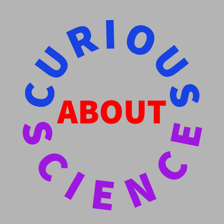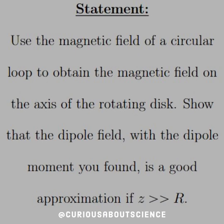All right, we're using some old results and some new techniques, and we'll see which one works out better. So use the magnetic field of a circular loop to obtain a magnetic field on the axis of a rotating disk. Show that the dipole field with the dipole moment you found is a good approximation if z is much, much greater than R.